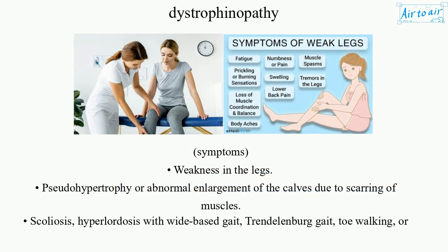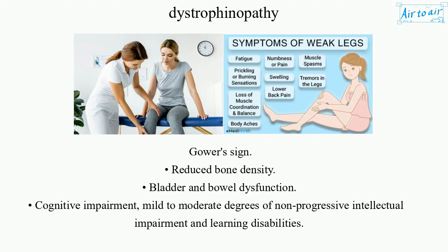Symptoms: Weakness in the legs. Pseudohypertrophy, or abnormal enlargement of the calves due to scarring of muscles. Scoliosis. Hyperlordosis with wide-based gait. Trendelenburg gait. Toe walking, or Gower's sign.